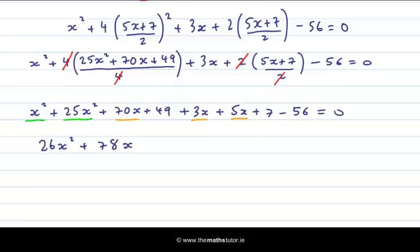And then my constants, which is plus 49, 7 and minus 56. Plus 49 and 7 is 56 and take away 56, which gives me 0. So there's no constant left. So this is just equal to the right hand side, which is still 0.